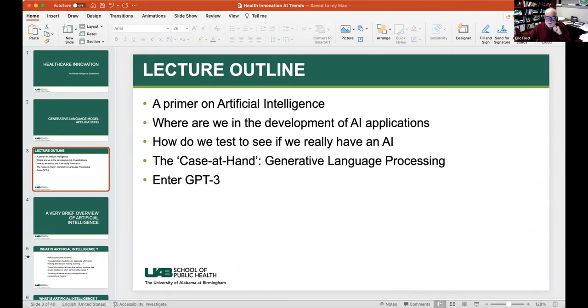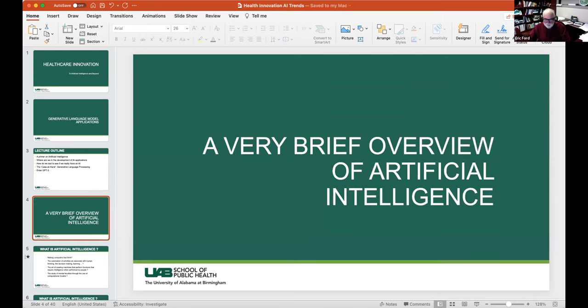I'm going to give you a quick primer on artificial intelligence. It's been a topic of discussion for well over 75 or 80 years. I'll talk about where we are in the development of AI applications, how do we test to see if we really have an AI. I'll give you the case at hand, which happens to be a generative language processing application called GPT-3, which is produced by a company called OpenAI. It's only one of many applications that is doing very similar work. However, this particular application has caught the public's imagination for two reasons. One is it's performing exceedingly well, and second, it's open, as the name of the company would tell you, to the public.